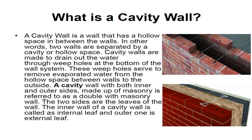Cavity wall. A cavity wall is a wall that has a hollow space in between the walls. In other words, two walls are separated by a cavity or hollow space. Cavity walls are made to drain out the water through weep holes at the bottom of the wall system. These weep holes serve to remove evaporated water from the hollow space between walls to the outside. A cavity wall with both inner and outer sides made up of masonry is referred to as a double masonry wall. The two sides are the leaves of the wall. The inner wall of a cavity wall is called the internal leaf and the outer one is the external leaf.